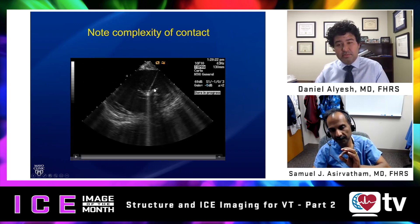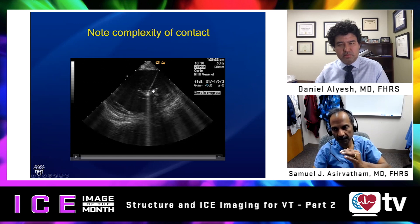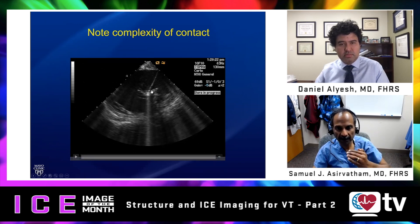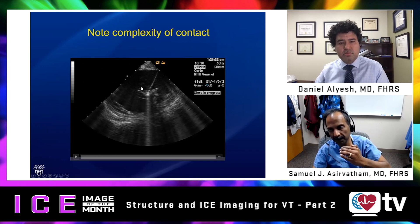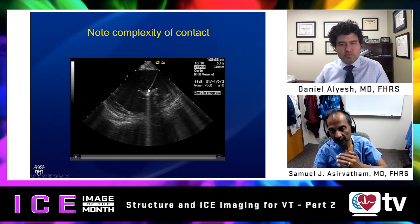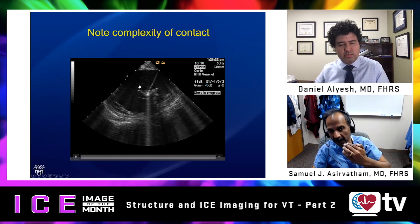Another value is if you've done an ablation and the arrhythmia doesn't go away but changes its morphology. If it's changed to a more inferior exit, it may be that we've ablated a connection to a more superior papillary muscle and we need to go to the base of that papillary muscle. On the other hand, if it changes to a more superior axis, it gives us an idea that we need to map whatever this was connecting to that's more superior.